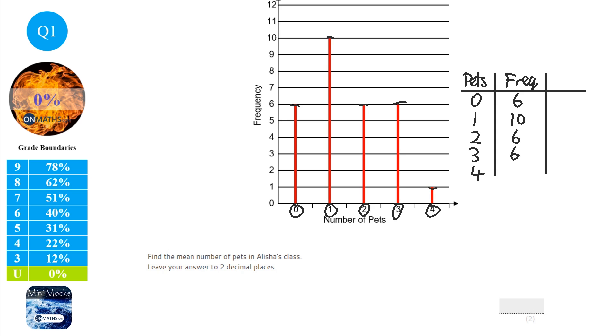Now to find the mean you add an fx column, and I always call this whatever is here x, and I always call the frequency f, so it's the fx column and you just times them together. So it's just a way of finding out those 6 that were 0, well how many is that in total? Well that's going to be 0. Those 10 that had 1 pet, how many pets is that in total? 10.